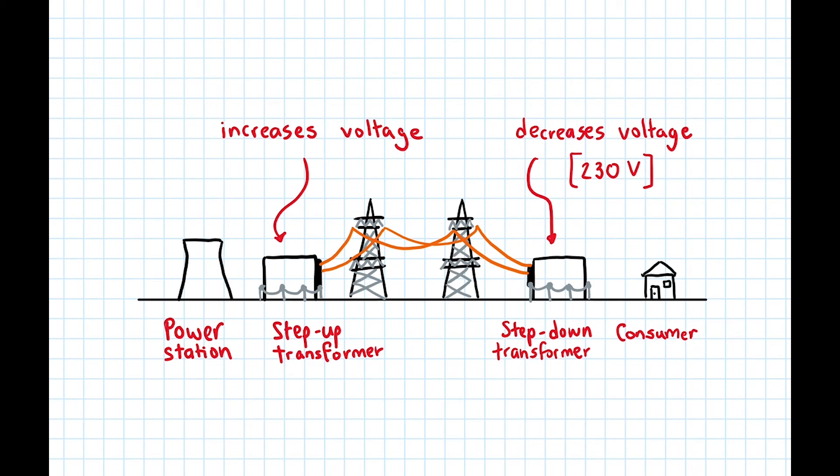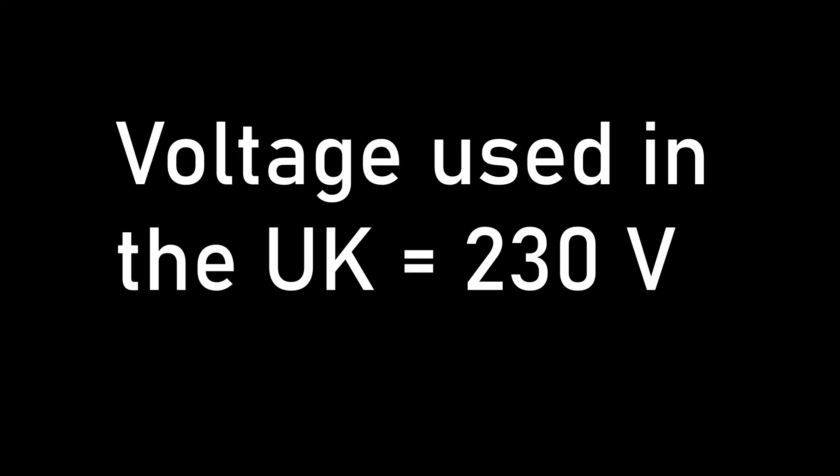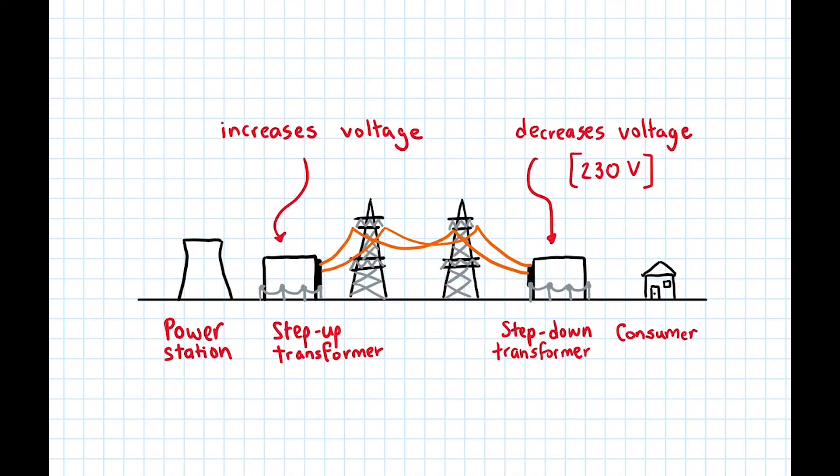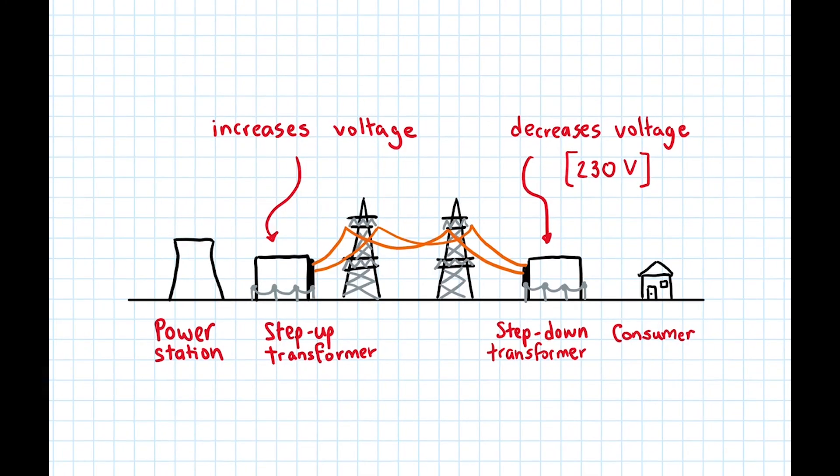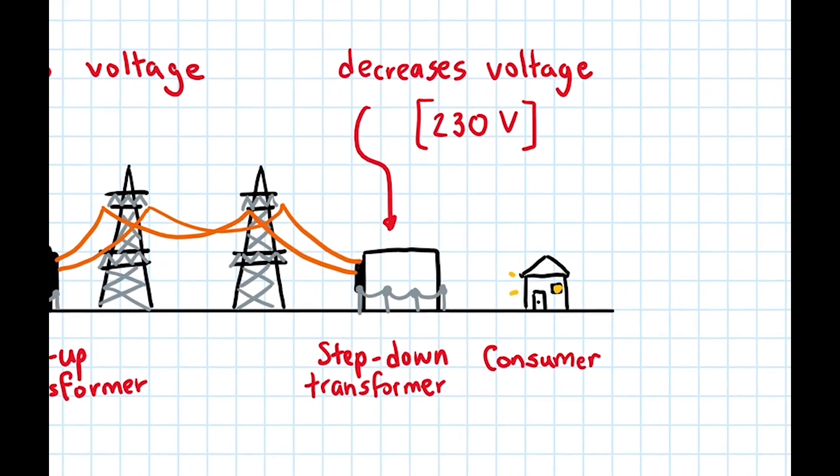230 volts is the standard voltage delivered to the electrical sockets in your home. While the step down transformer decreases voltage, it increases currents to a sufficient level to power your electrical supplies.